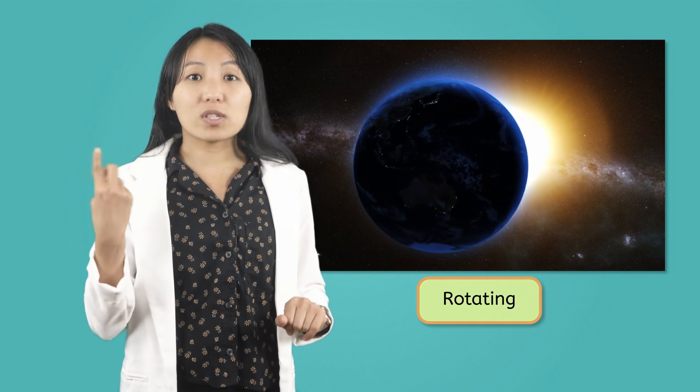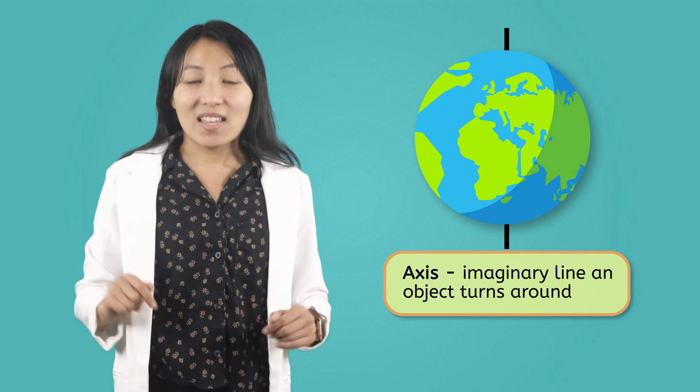The Earth is also moving in another way at the very same time. Do you remember what Earth does that causes the cycle of day and night? That's right! The Earth is constantly rotating or spinning. But did you know Earth rotates around an imaginary line called an axis? This axis runs right through the center of the Earth, from the North Pole all the way down to the South Pole.